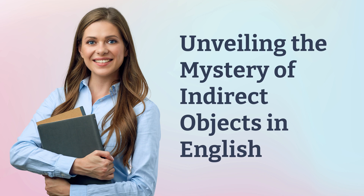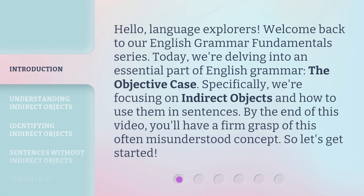Unveiling the mystery of indirect objects in English. Hello, Language Explorers. Welcome back to our English Grammar Fundamentals series. Today, we're delving into an essential part of English grammar: the objective case. Specifically, we're focusing on indirect objects and how to use them in sentences. By the end of this video, you'll have a firm grasp of this often misunderstood concept. So, let's get started.